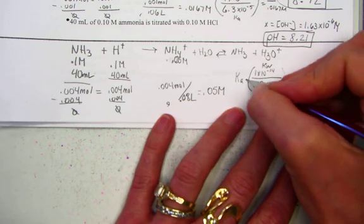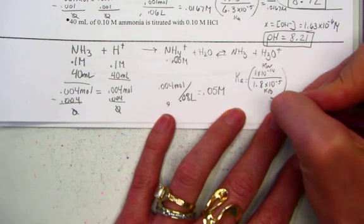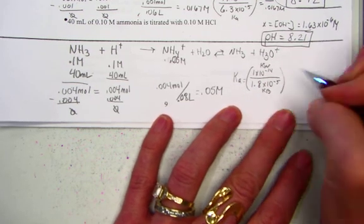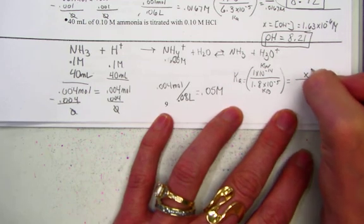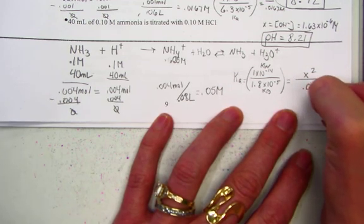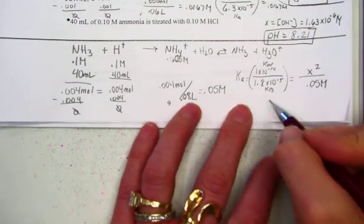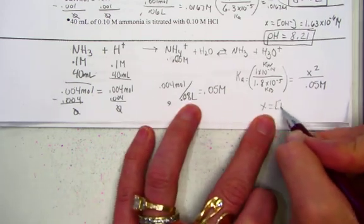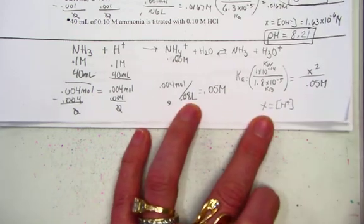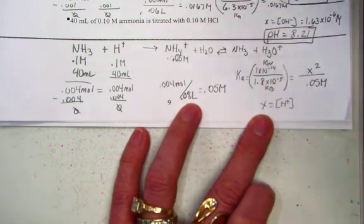In our parenthesis, we have determined Kw over the known Kb of ammonia. We'll convert that to be a Ka. We'll set that equal to x squared over 0.05 molar, where x is going to stand for the hydrogen ion, which can then be used to find pH directly for the acid proton.